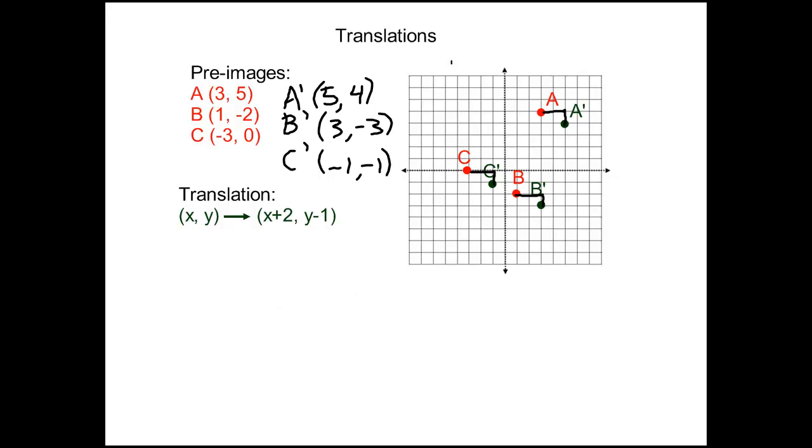Another way that you'll sometimes be given this translation is instead of in a function like this, you'll be given what's called a translation vector. A translation vector is a more concise way of giving this translation. First of all, you need to know what a vector looks like.